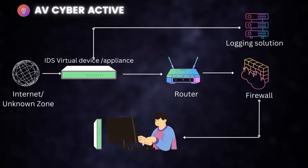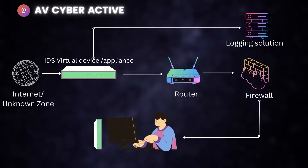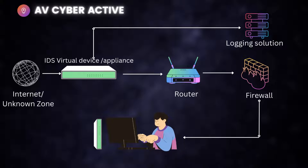Only then is traffic allowed to come into your router and then your firewall and the network. Just like IDS, a host-based IPS — an intrusion prevention system — can also be deployed on a user's machine. As the name suggests, it doesn't just detect; it also has the ability to prevent attacks.